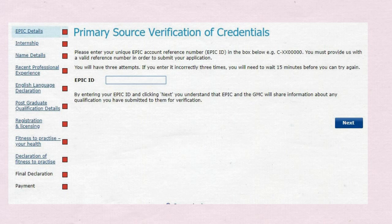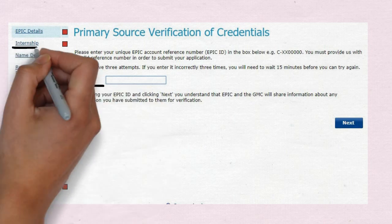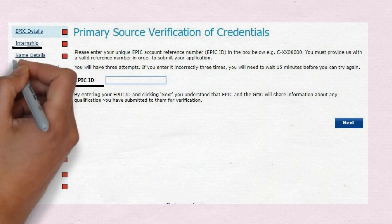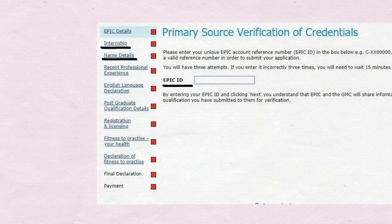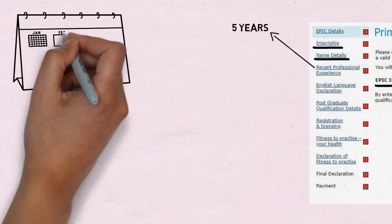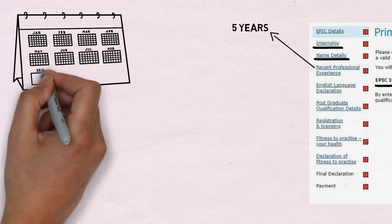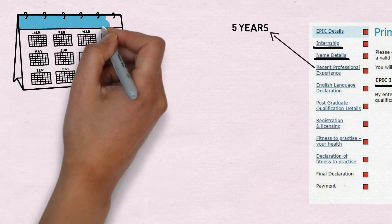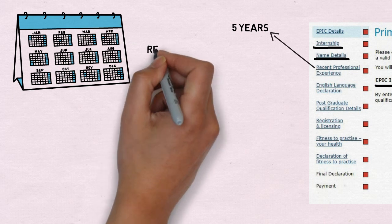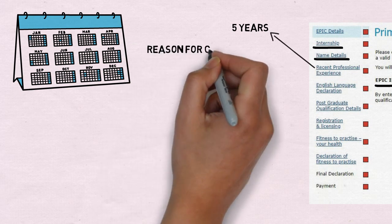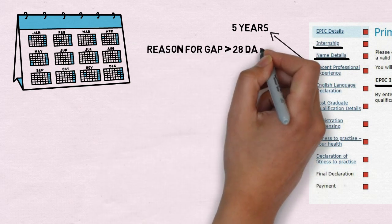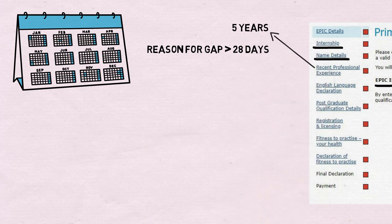Further, they will ask you to provide your EPIC details, your internship details, and your personal details. After that, you have to give your professional experience for the past five years. You should not have any gap of more than 28 days, but if you have a gap, you have to mention the details of that gap and they might also ask you to provide some evidence for it.